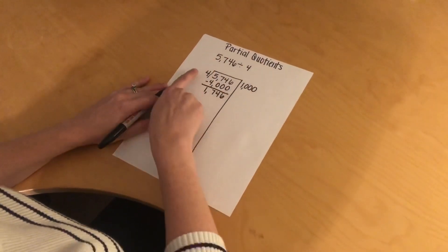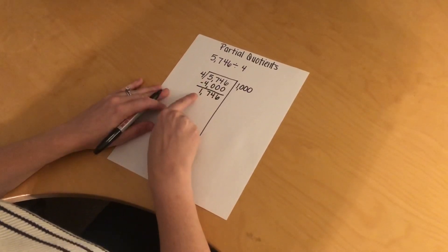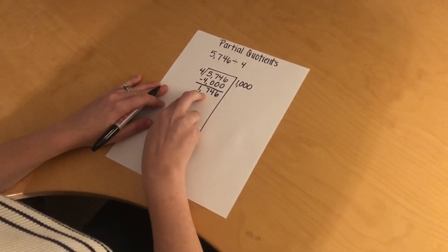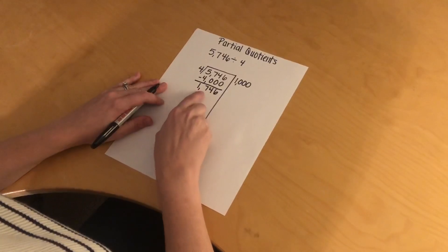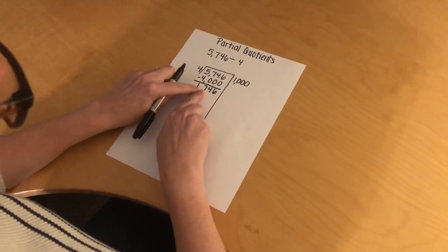I'm going to start over. I divide, I look, can 4 go into 1? It cannot, so then I'm going to look at the first 2 digits, which are a 1 and a 7, so 17. Can 4 go into 17?